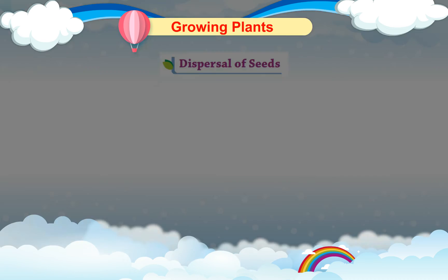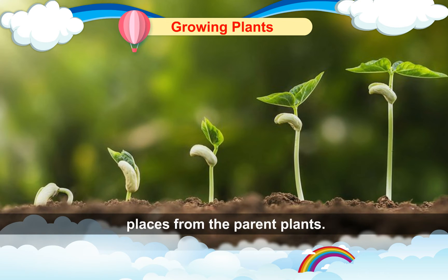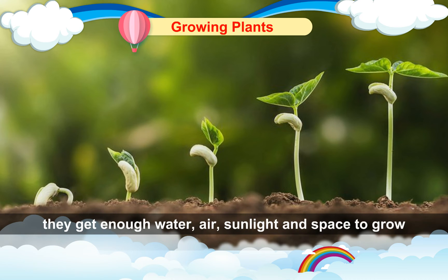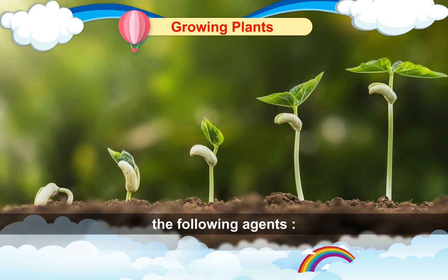Dispersal of seeds. Dispersal is the scattering of seeds to far places from the parent plants. Seeds disperse so that they get enough water, air, sunlight and space to grow into new plants. Seeds are dispersed by the following agents.